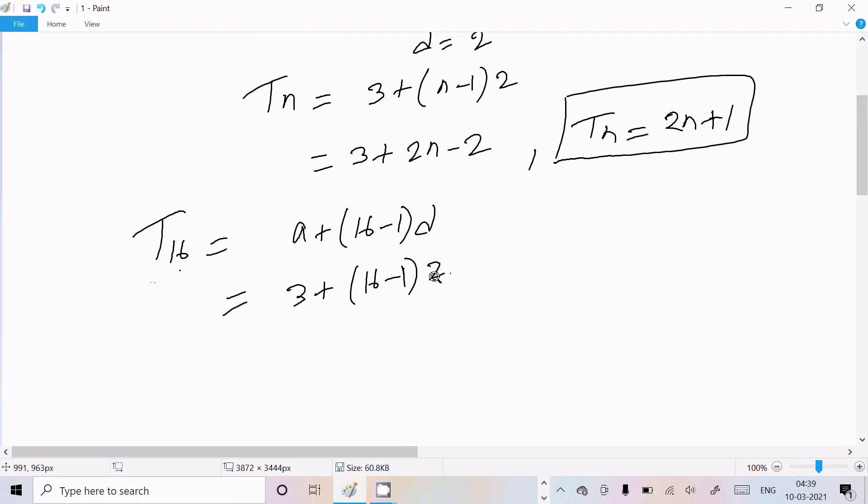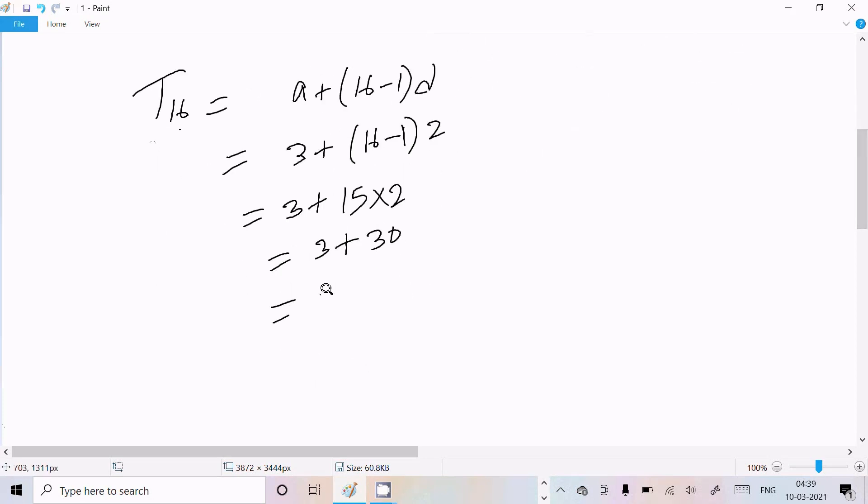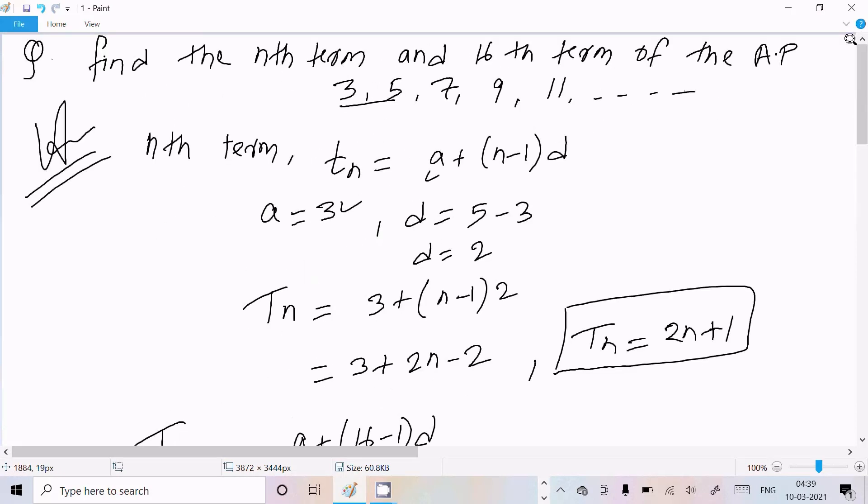So here 3 plus 15 into 2. So 3 plus 15 into 2 that comes 30. Now here 30 plus 3 that comes 33. So T16 is 33, that's the answer.